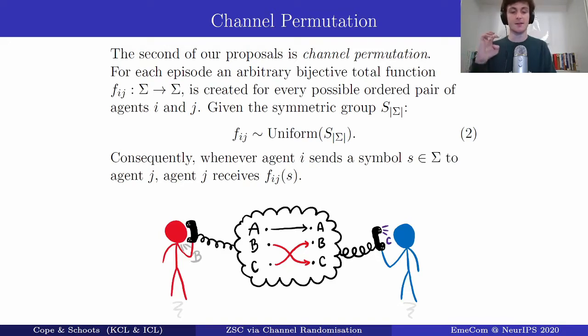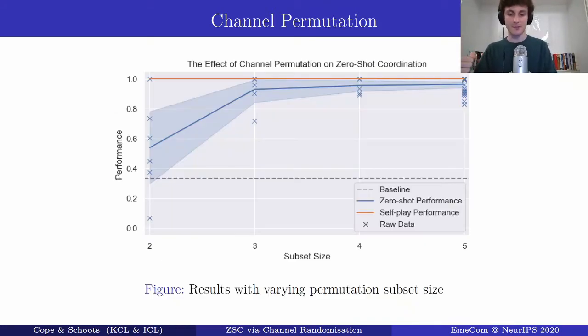This mapping is used when an agent sends a message to another agent - it's permuted according to this map. So in the cartoon below we see the red agent saying B but the map maps B to C so the blue agent receives C and this is consistent throughout the entire episode.